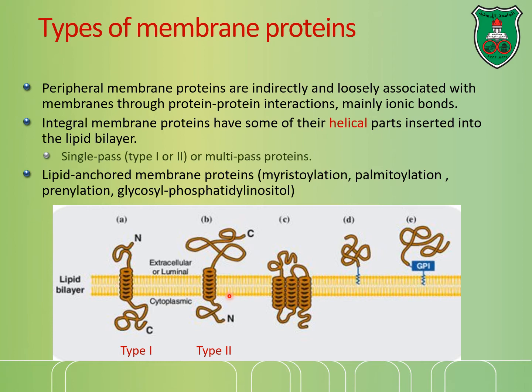Even for proteins that span the plasma membrane just once with only one transmembrane domain, there are two types: Type 1 and Type 2, depending on the orientation of the N-terminus and C-terminus. Type 1 proteins have the carboxy-terminus on the cytoplasmic side and the N-terminus positioned outside the cell. The opposite is true for Type 2 proteins.